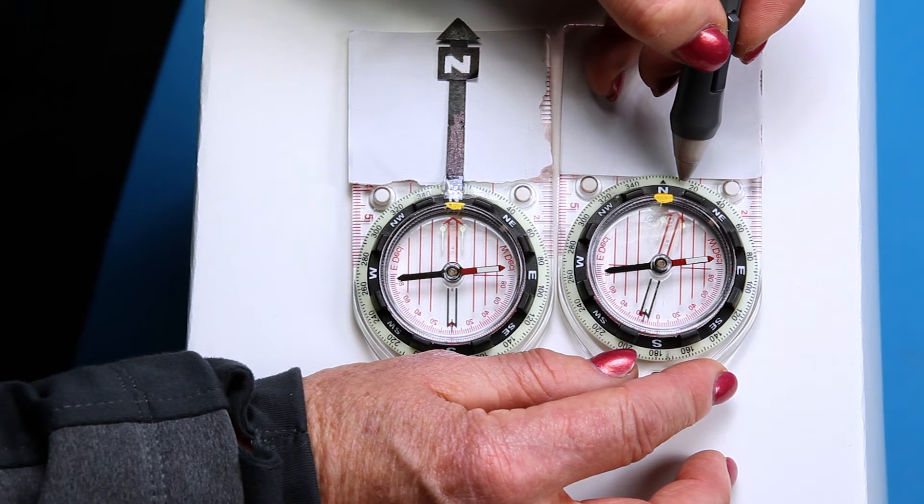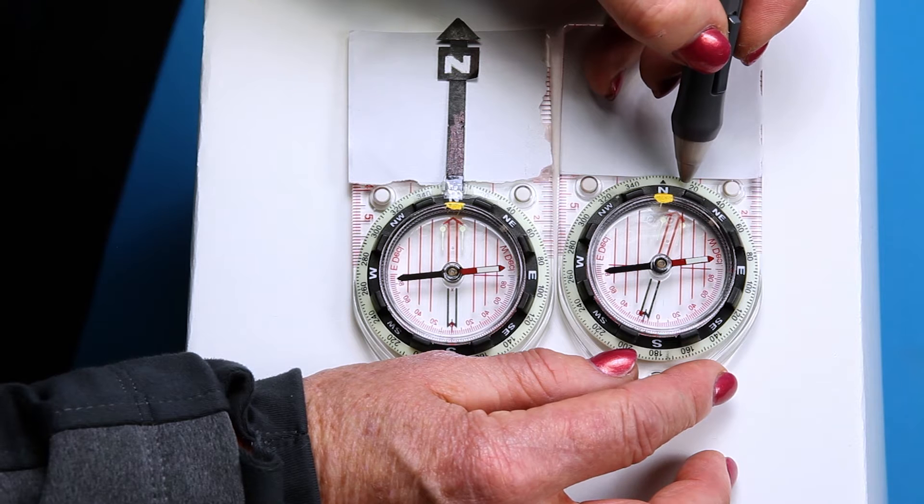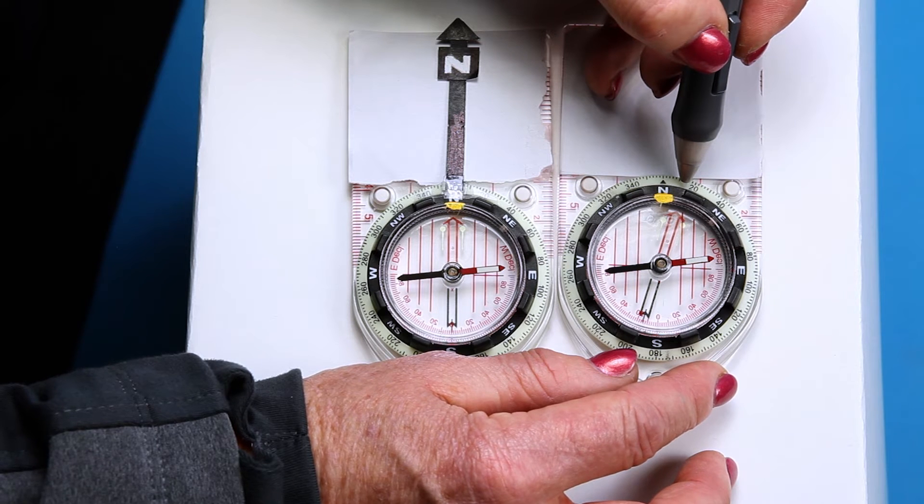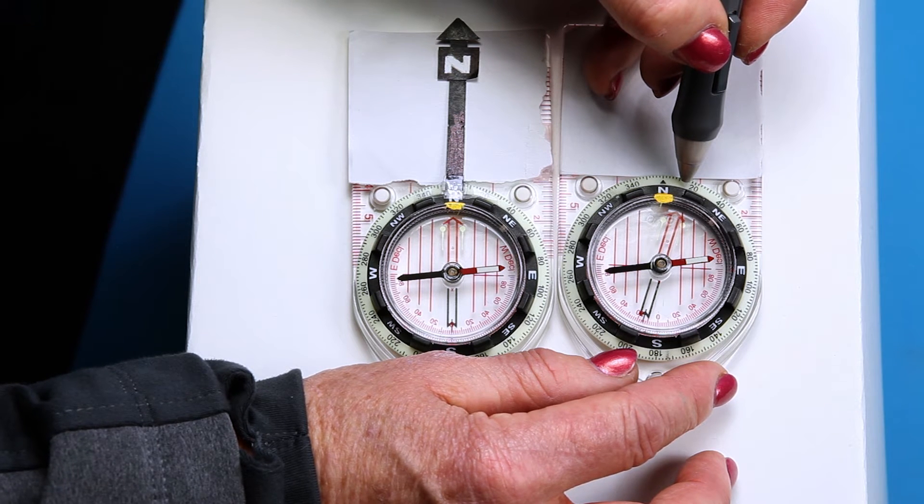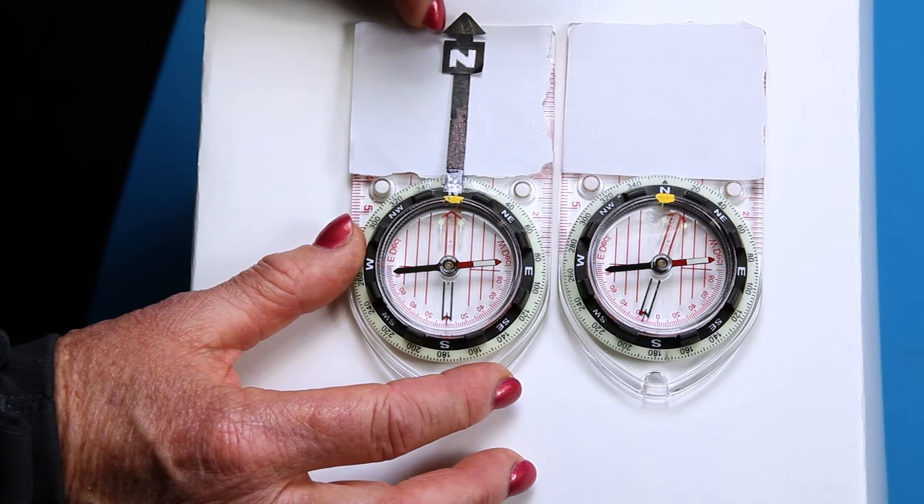It's adjusted so that it matches your declination, the difference between North and magnetic North where the needle points. In Southern California, the declination is 12 degrees east of North. So that's what you'll set on your compass.